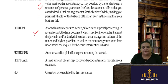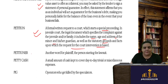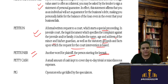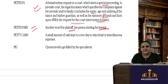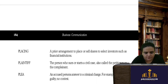A petition is a formal written request to the court which starts a special proceeding — in a juvenile court, the legal document specifies the complaint against the juvenile and includes the name, age, address of the minor, as well as the statutory grounds and facts for court intervention. Petitioner is another word for plaintiff — the person starting the lawsuit. Petty cash refers to day-to-day miscellaneous expenses kept in a petty cash box.